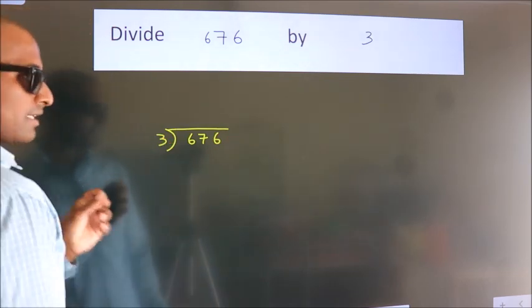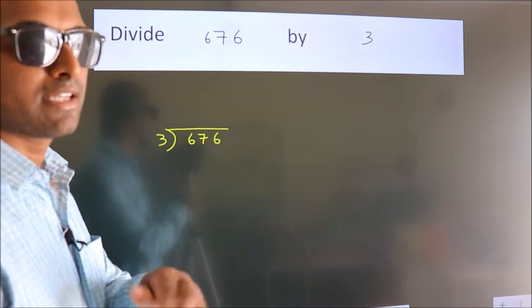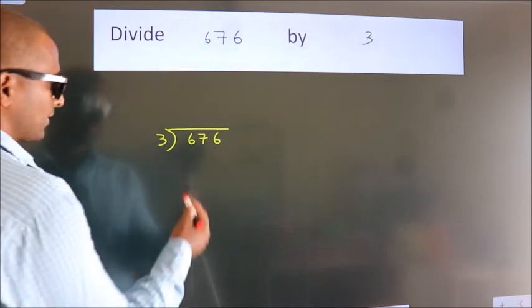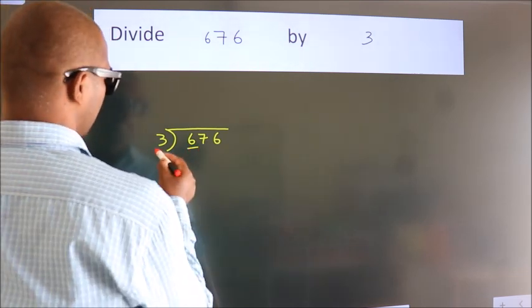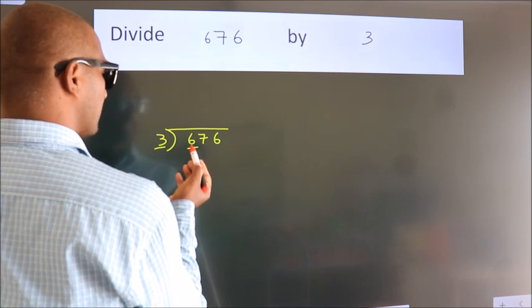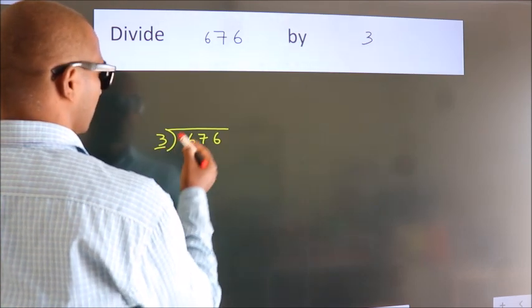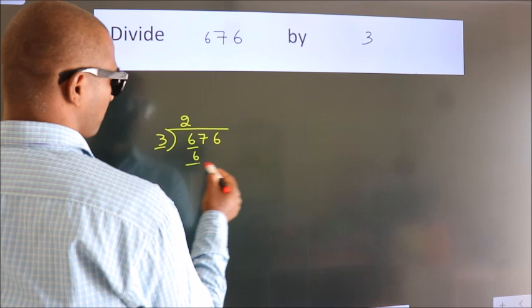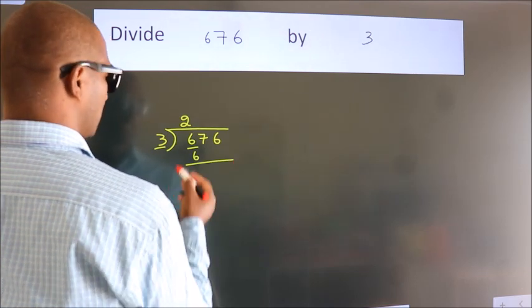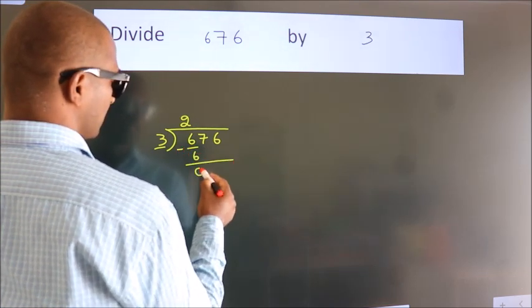This is your step 1. Next. Here we have 6. Here 3. When do we get 6? In 3 table, 3 2s, 6. Now we should subtract. We get 0.